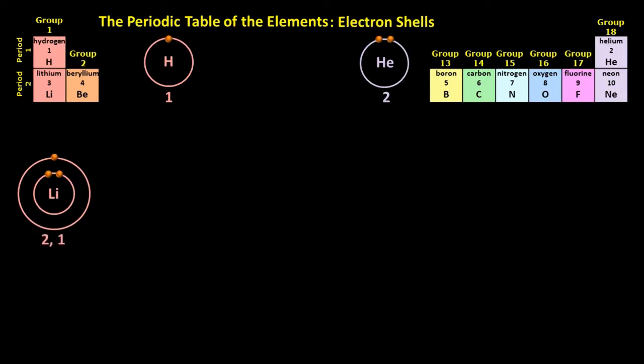Now, I'll just point out quickly that none of these atoms are actually drawn to scale. Beryllium comes next. It has four electrons and an electron configuration of two, two.